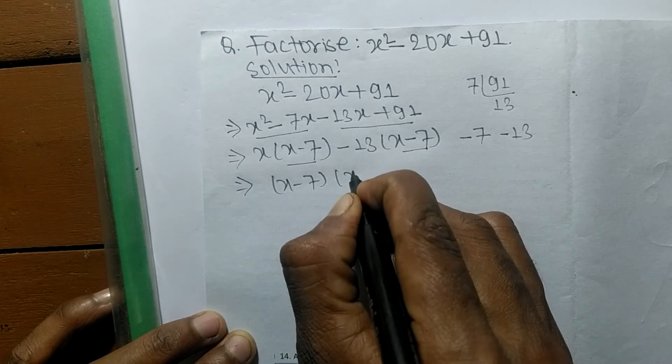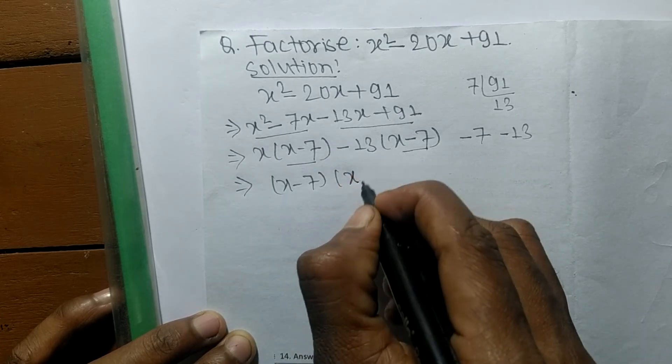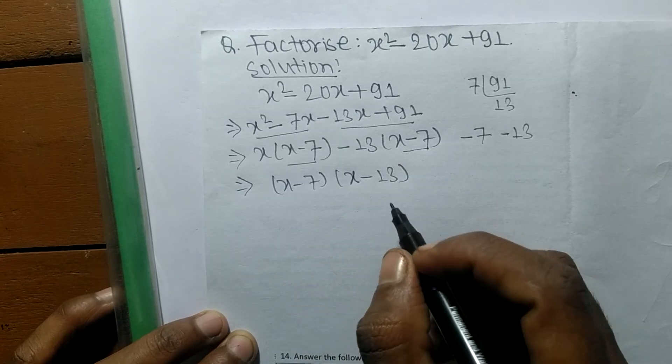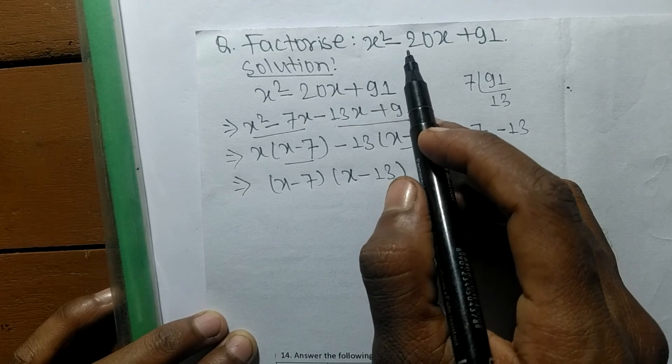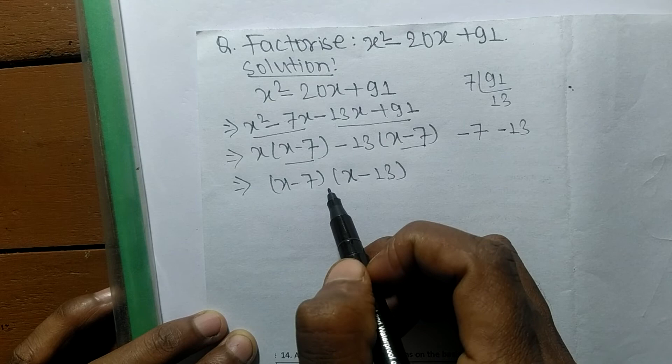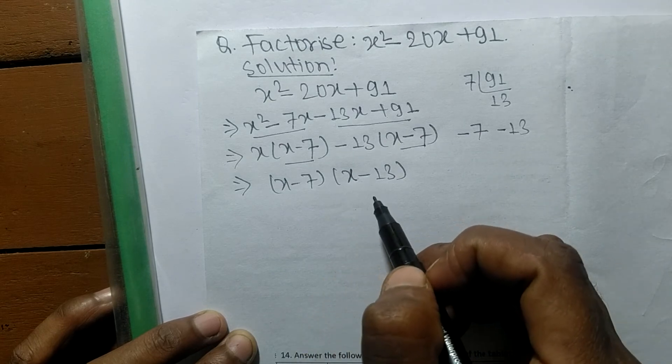The remaining here in the first expression is x, and in the second, the remaining is -13. So the factors of x² - 20x + 91 are (x - 7) and (x - 13).